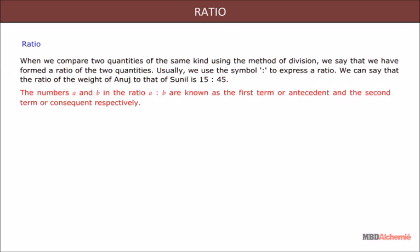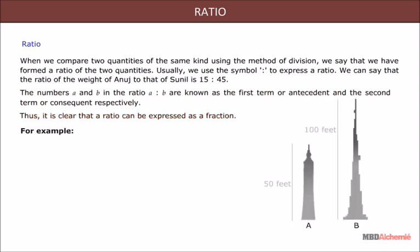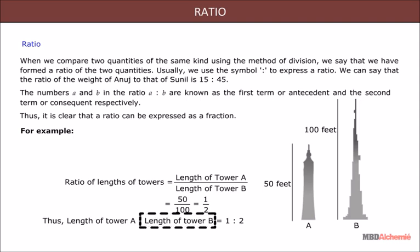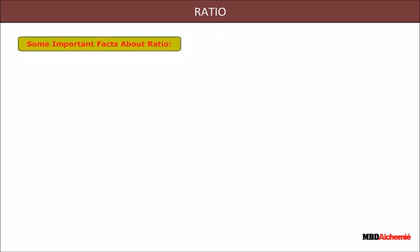15 is to 45. The numbers a and b in the ratio a:b are known as the first term or antecedent and the second term or consequent respectively. Thus, a ratio can be expressed as a fraction. For example, the ratio of the lengths of two towers A and B is equal to the length of tower A upon length of tower B, which is equal to 1 upon 2. Thus, the length of tower A to length of tower B is equal to 1 is to 2.